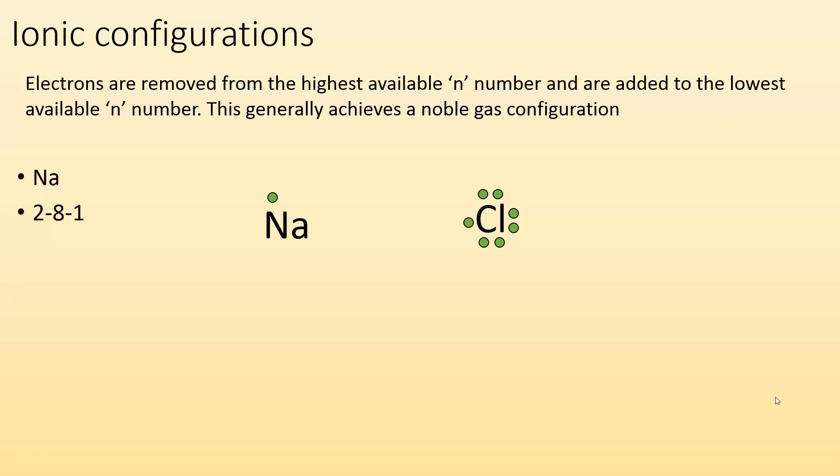Sodium's electron configuration is 2-8-1 or for its quantum configuration, it's 1s2, 2s2, 2p6, 3s1. And if we wanted to give the abbreviated configuration for that, it would just be Ne and then 3s1. And then curious enough, what happens for Na plus?